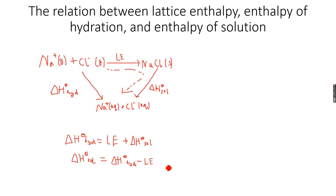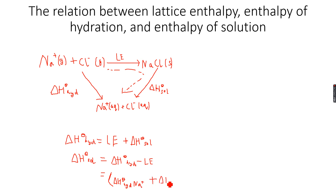Now that you know this relation, you can straight away calculate the enthalpy change of solution. To avoid confusion: the enthalpy change of hydration here is the sum of the enthalpy changes of hydration of both ions — for example, Na⁺ and Cl⁻ — minus the lattice enthalpy. This is the full relation between enthalpy change of solution, enthalpy change of hydration, and lattice enthalpy.